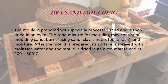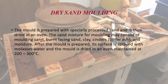Baking hardens the binder, increasing the strength of the mold. The temperature and duration of baking ranges from 200 to 300 degrees F, or up to a maximum of 450 degrees F, and from a few minutes to several hours, depending on the type of metal being poured and the size of casting. The sand mixture may consist of molding sand, burnt facing sand, clay, cinders (commonly called boiler ash), and moisture.